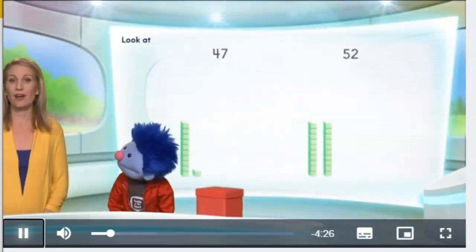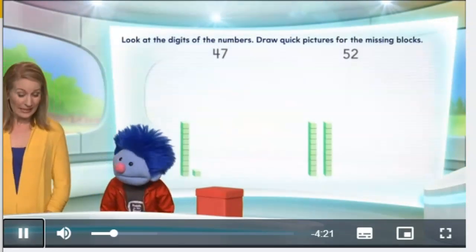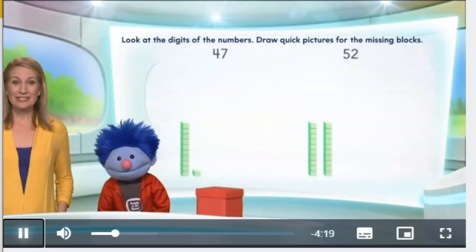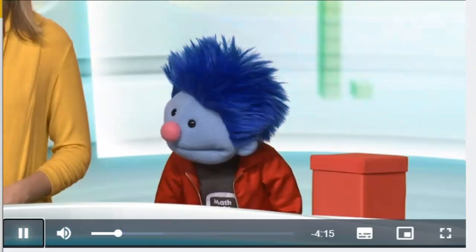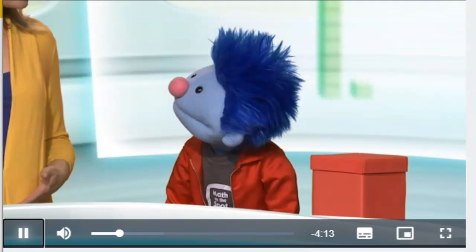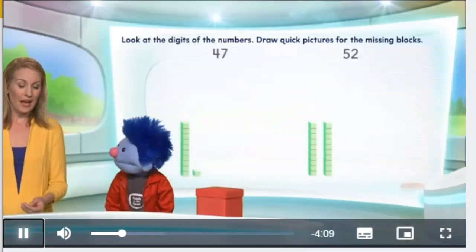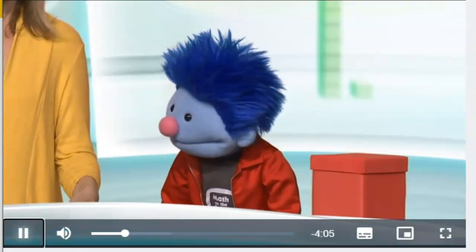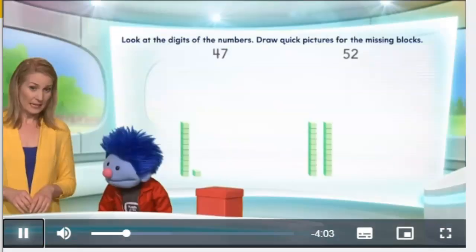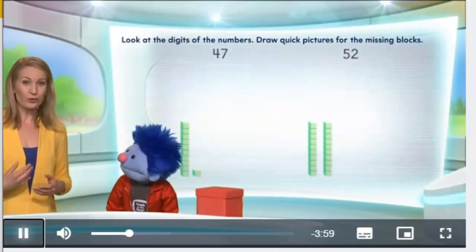I think we should just get on with our math puzzle. That sounds good to me. Well, take a look at the digits of these numbers, 47 and 52. We're going to draw some quick pictures for 47 and 52. The pictures that are below each number are only partially made. In fact, there are lines and circles missing.